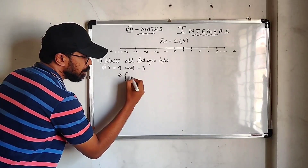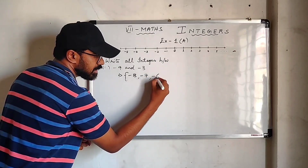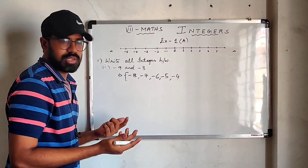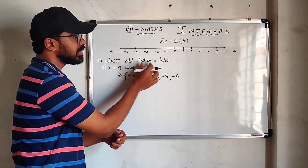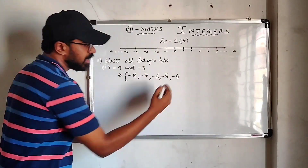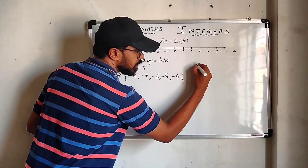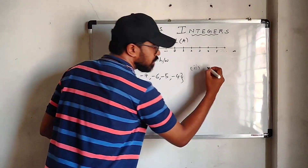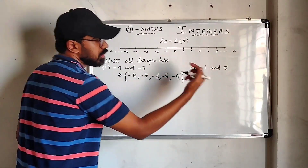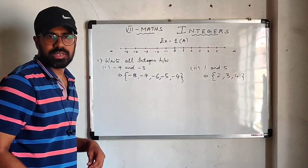So our answer will be: minus 8, minus 7, minus 6, minus 5, minus 4. Should we write minus 3? No, because the question clearly says write all integers between minus 9 and minus 3, so we skip both minus 9 and minus 3. For a simple positive example: if I ask you to write all integers between 1 and 5, the answer will simply be 2, 3, 4.